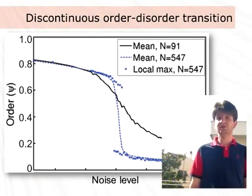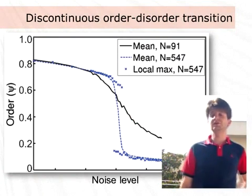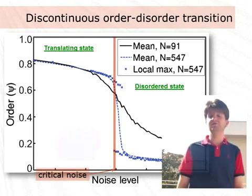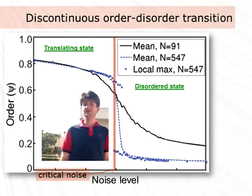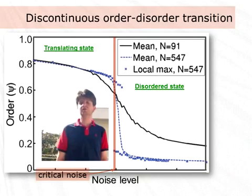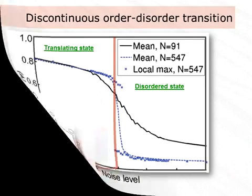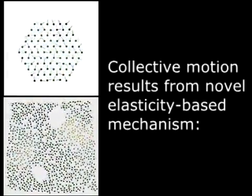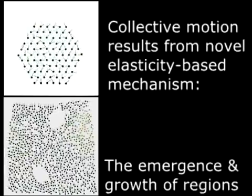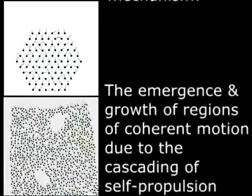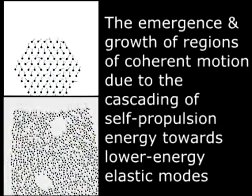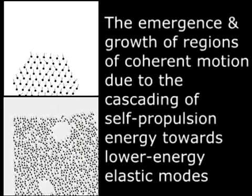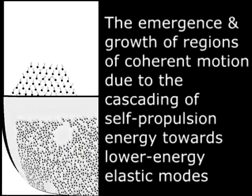Our results show that the active elastic sheet model displays a discontinuous transition at the critical noise level, below which the group self-organizes into a collective translating or rotating state. This collective motion results from a novel elasticity-based mechanism: the emergence and growth of regions of coherent motion due to the cascading of self-propulsion energy towards lower energy elastic modes.